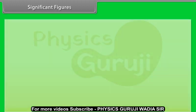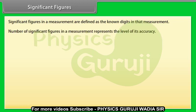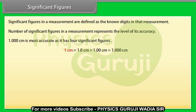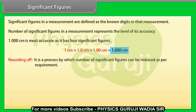Significant figures: Significant figures in a measurement are defined as the known digits in the measurement. Number of significant figures in a measurement represents the level of its accuracy. It means more the number of significant figures in a measurement, more accurate that measurement is. Let us take an example: 1.000 centimeter is most accurate as it has four significant figures.